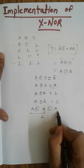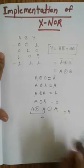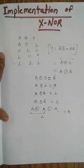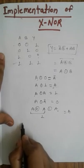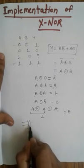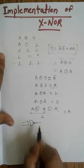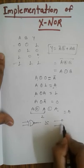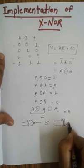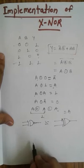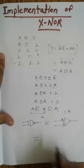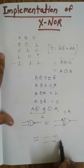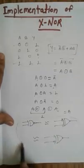Three times XNOR will give the result as A. There are three representations for XNOR gate — all three are equivalent and I will prove that.